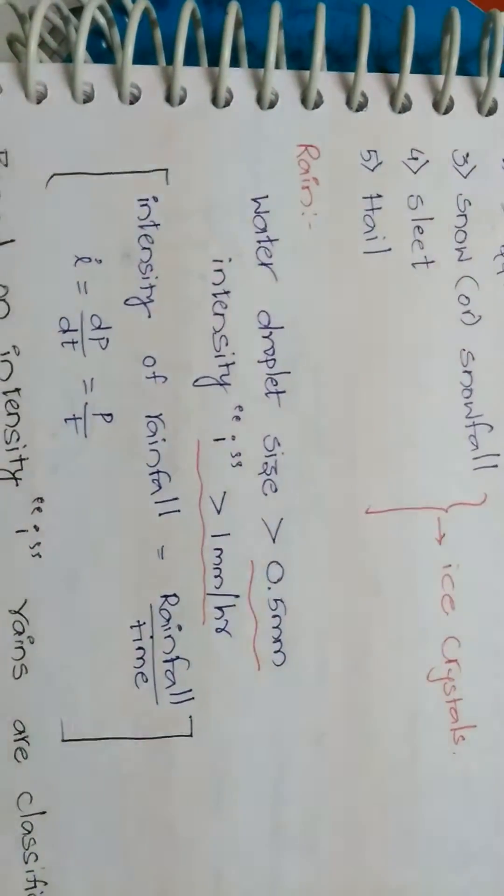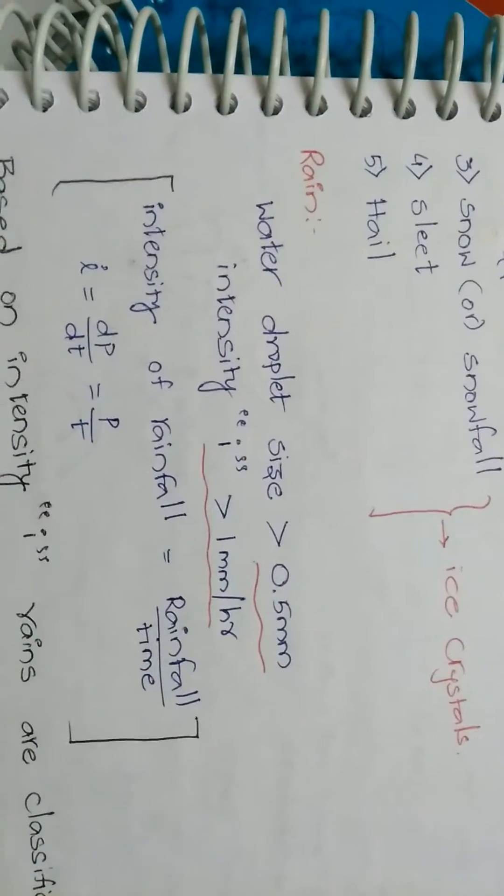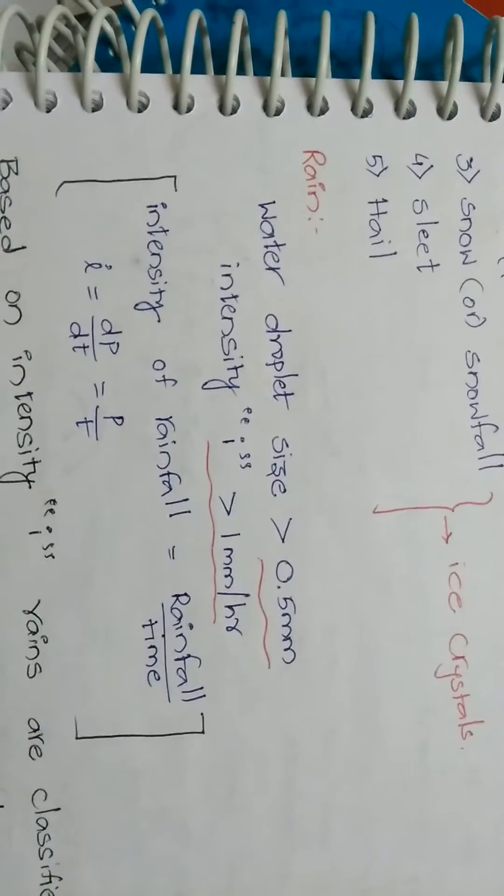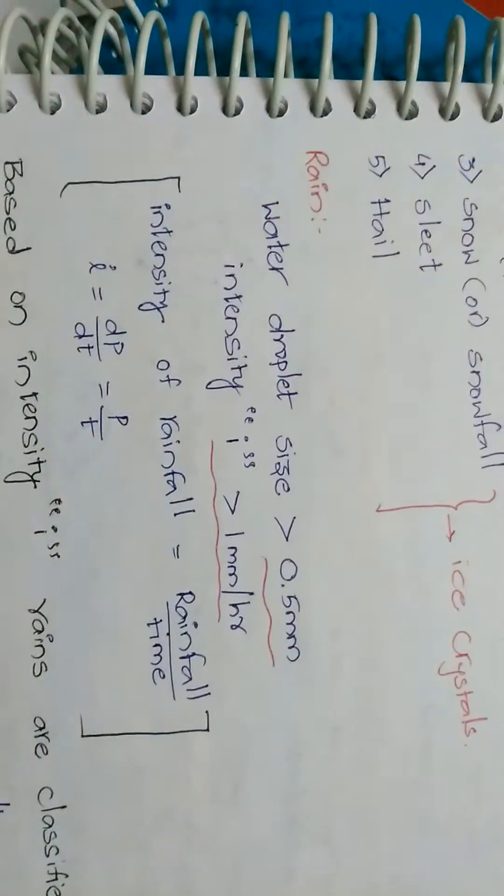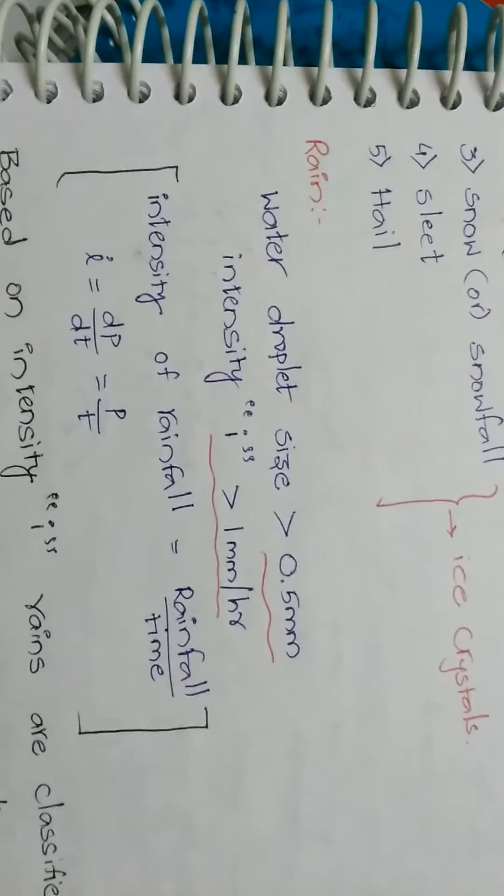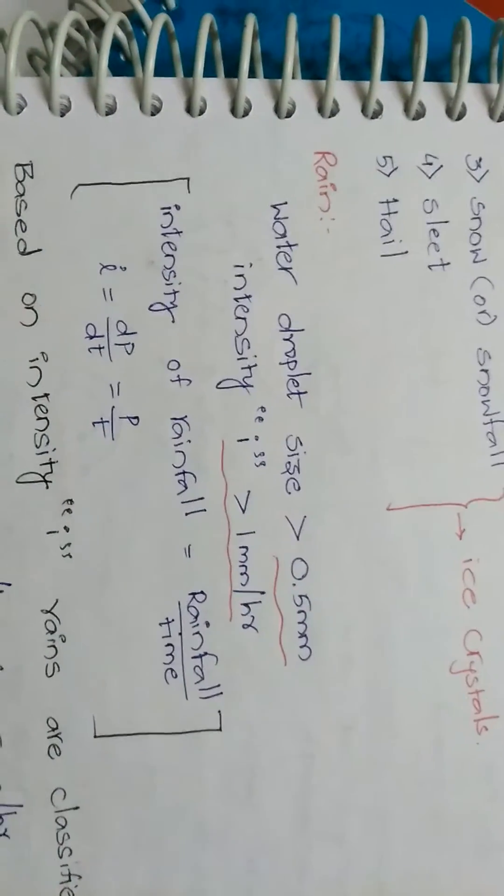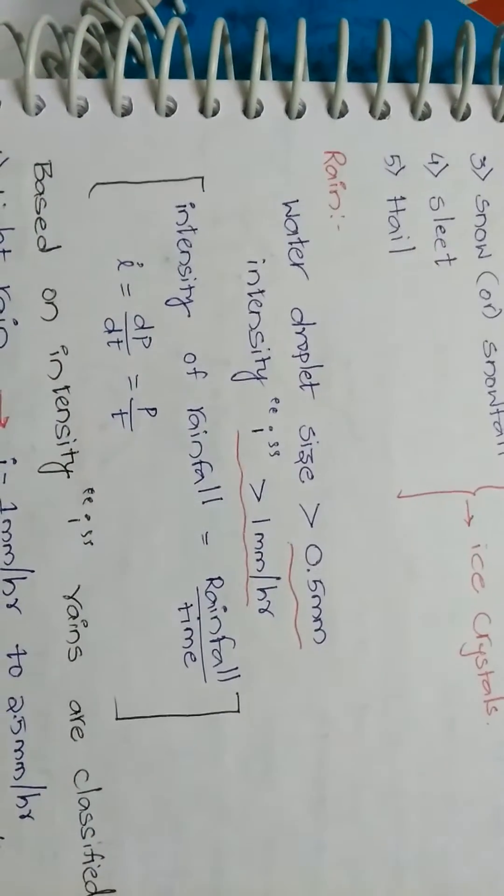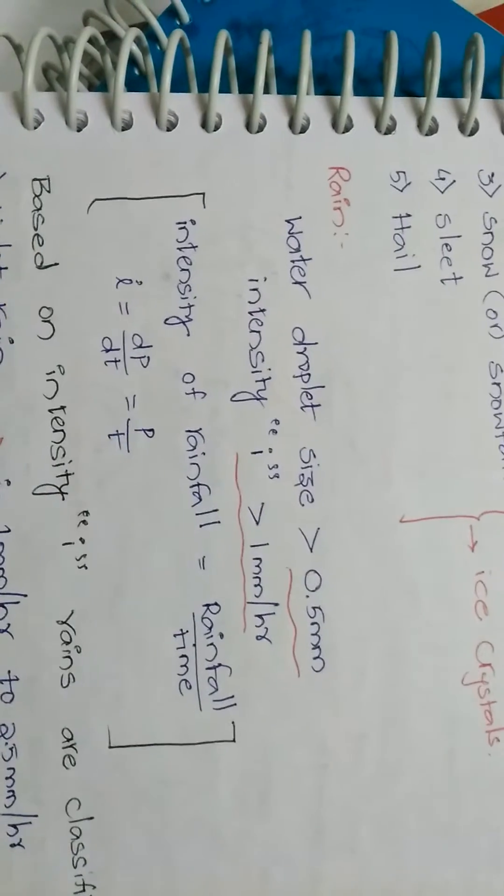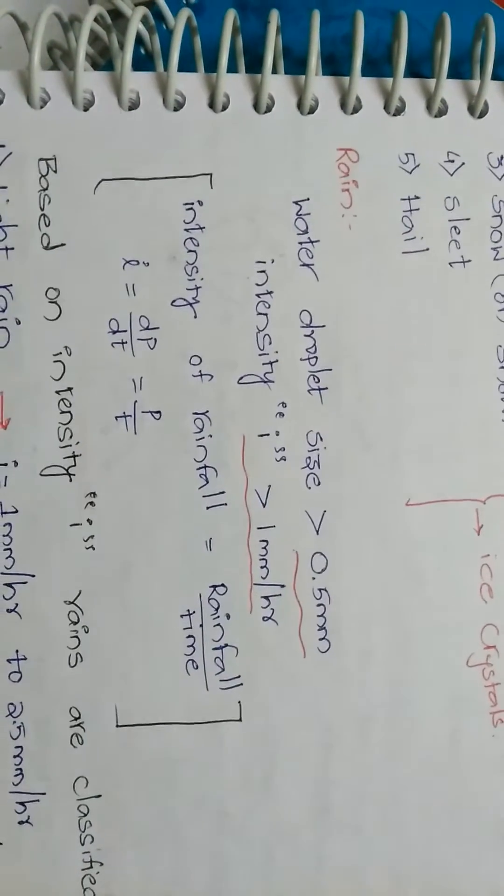Rain means water droplet size is greater than 0.5 mm, intensity greater than 1 mm per hour. Intensity of rainfall is defined as the ratio of rainfall to the time: I equals dp by dt equals p by t.